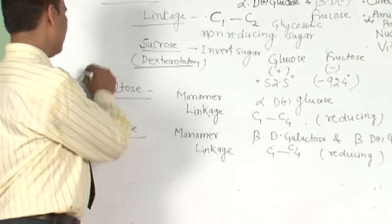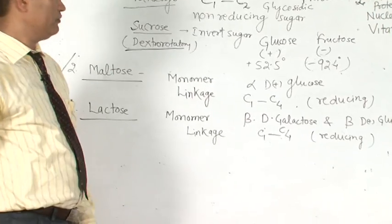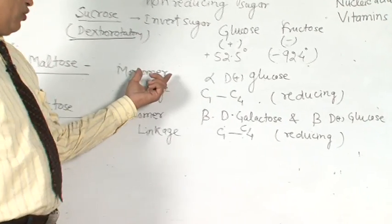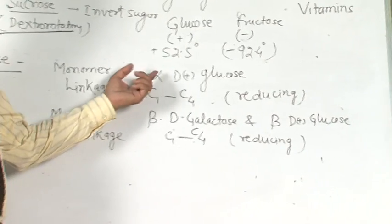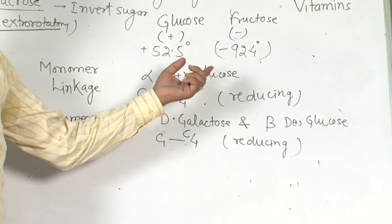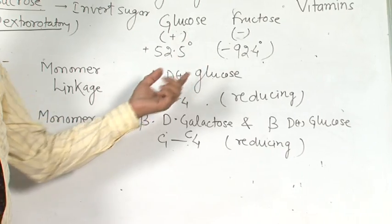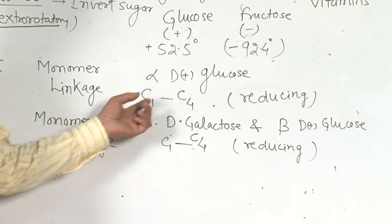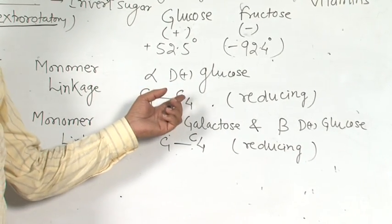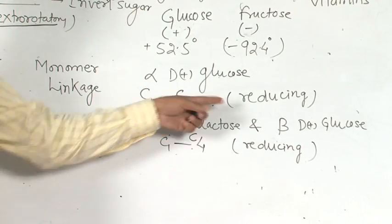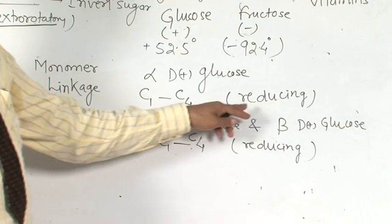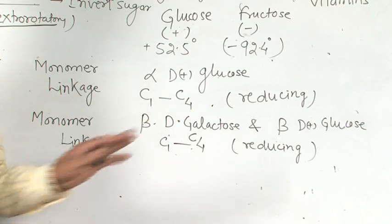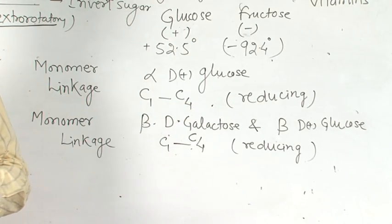The second disaccharide is maltose. The monomer of maltose is alpha-D-plus-glucose. The linkage is C1–C4. Maltose is a reducing sugar because there is a free carbonyl group.